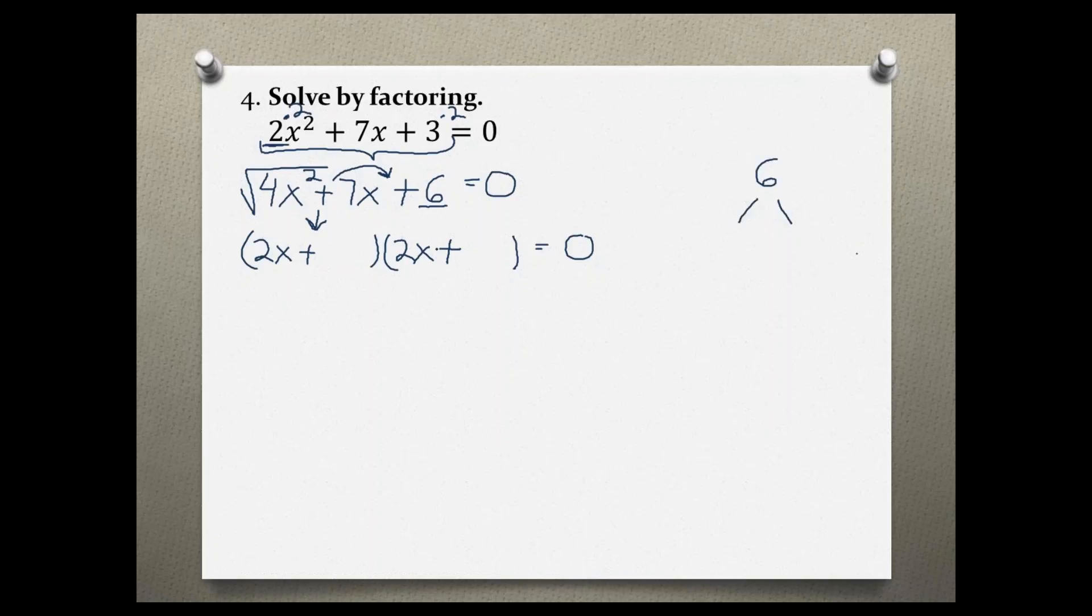I'm going to look at the last number, which is 6, and I'm trying to find the factors with same signs that must add to give me the middle number, which is 7. The only factors I could think of that will add to give me 7 are 6 and 1. 6 times 1 is 6 and 6 plus 1 is 7. The larger of the two factors goes first and the smaller one second.